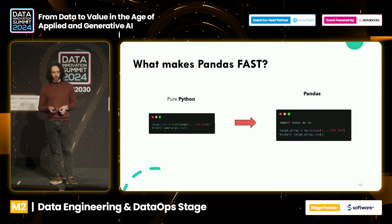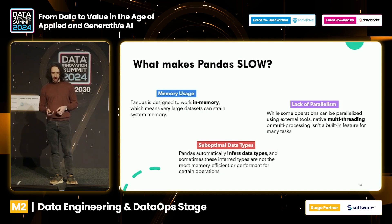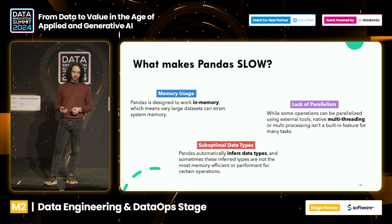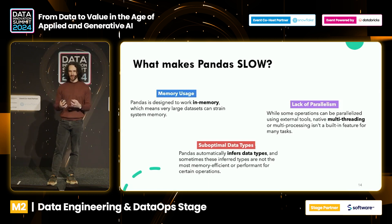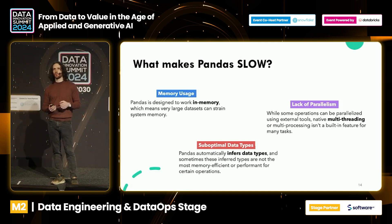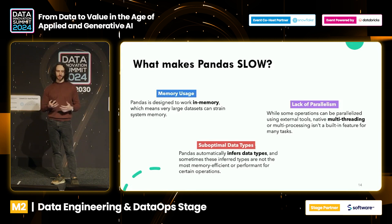At the same time we ask ourselves: what makes Pandas slow? The first thing is memory — the fact that you have to load everything into memory makes everything quite heavy. Your laptop gets very heavy. The problem is that Pandas was not meant for the huge datasets we have nowadays, and that's why we also have some other solutions in place. Lack of parallelism is probably one of the biggest problems nowadays — because we have very powerful machines, we can use our CPUs, but we don't have multi-threading by default in Pandas.